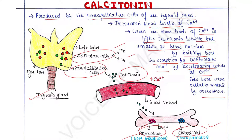Osteoclasts break down bones and release calcium into blood from the extracellular matrix, increasing blood calcium levels, whereas osteoblasts decrease it. These two processes are opposite. Calcitonin inhibits osteoclasts from breaking down bones and releasing calcium into the blood, and stimulates osteoblasts to uptake calcium to form bone. Therefore, the hormone decreases calcium level in blood.